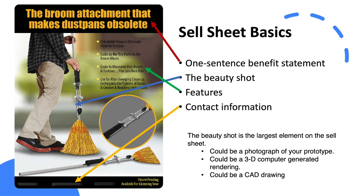The components of a sell sheet are quite simple. At the very top is your unique selling proposition, or your one-sentence benefit statement — it brings out the big emotional benefit of your idea. In the middle, the biggest picture is your beauty shot — that's your product, and it needs to look good. If you don't have a prototype, you can use a 3D computer-generated rendering. Next, you'll have features — maybe three, four, or five; don't go too many. Down at the bottom will be your contact information.